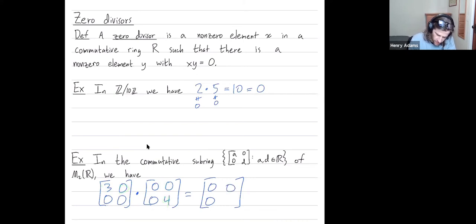And then the bottom right entry, I line that up and I get, well the row's all zeros, so I'm going to get zero. And this is a commutative sub-ring. If I multiply these two diagonal matrices in the opposite order, I will get the zero matrix.